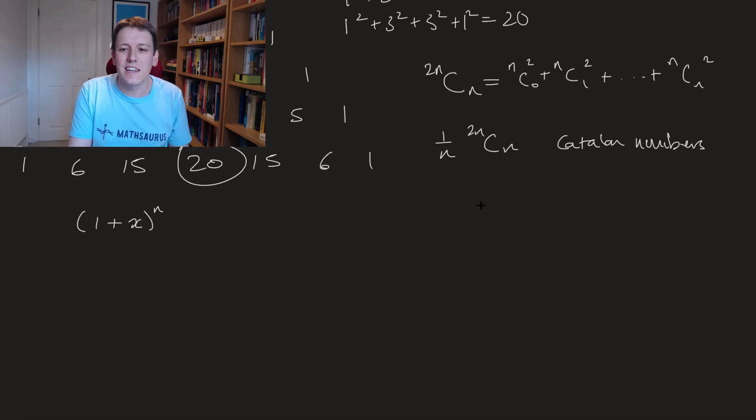If I do a plus b to the n I just get n choose 0 a to the n b to the 0 etc plus n choose 1 a to the n minus 1 b to the 1 etc right.